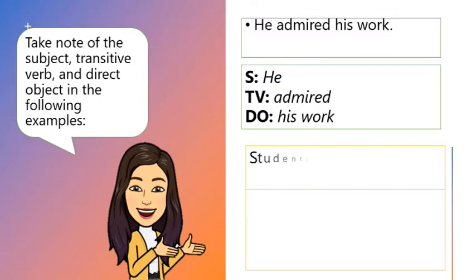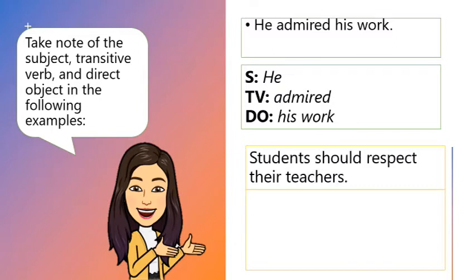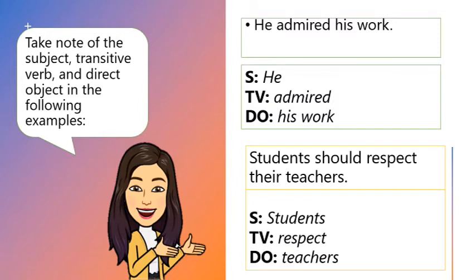Another example: Students should respect their teachers. What do you think is the subject, the transitive verb, and the direct object? Yes, the subject is students, respect is the transitive verb, and teachers is the direct object.